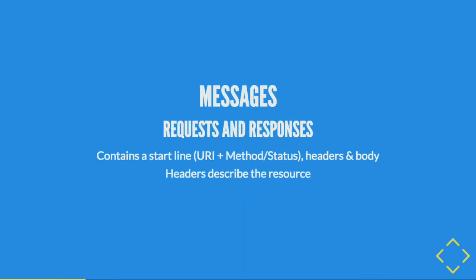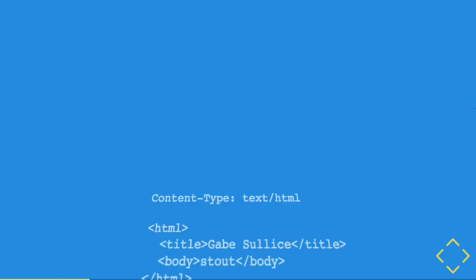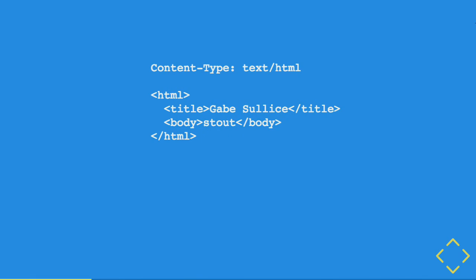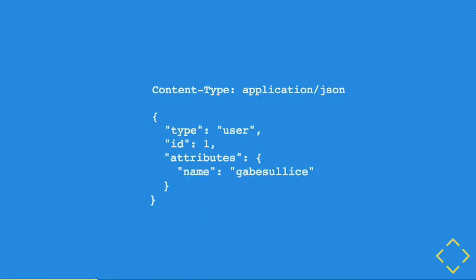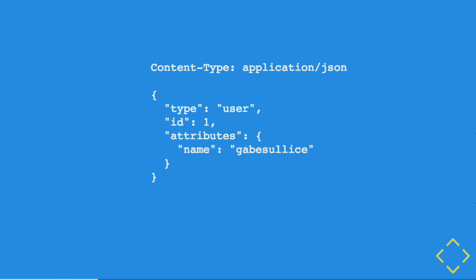The fundamental idea of HTTP is that you have requests and responses between a client and server. They're composed of a URI, method or status, headers — which are meta information about the message — and the body, which is what's actually there. Headers describe the resource. For example, the content-type header might say 'text/HTML', which tells the client how to interpret the information — don't parse this as JSON, parse it as HTML.